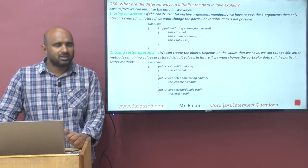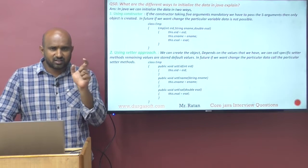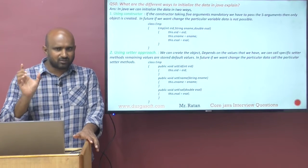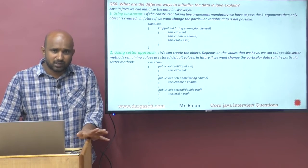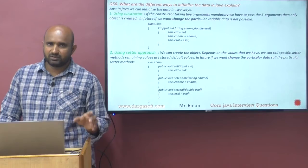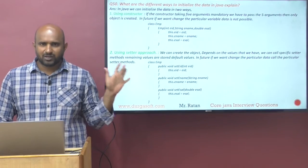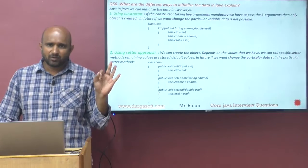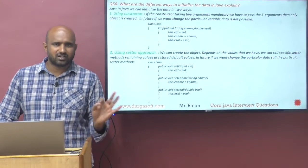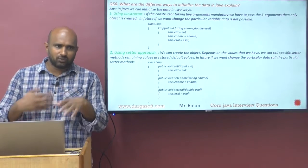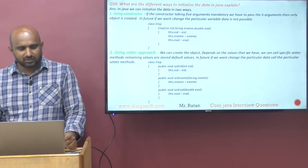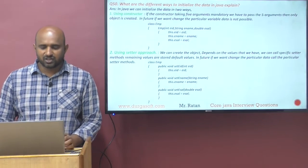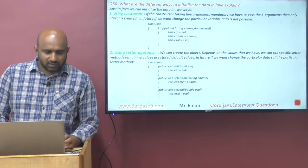One is the constructor approach — mandatory injection. If the constructor takes five arguments, we must pass all five during object creation, and we cannot update specific values later. The other is the setter approach — optional dependencies. We can set only the values we have, remaining values hold defaults, and we can call specific setter methods later to update them. These are the two different ways to initialize data in Java.